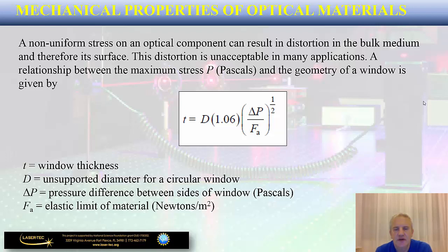Here's an example of an equation that can be used. The stress can be quantified through a relationship involving the thickness and diameter of the optical component, pressure difference between its sides, and elasticity of the material. This formula is given for reference to show that thermodynamic concepts can be used to quantify the amount of stress induced in cases of significant thermal variations on materials with different coefficients of expansion.